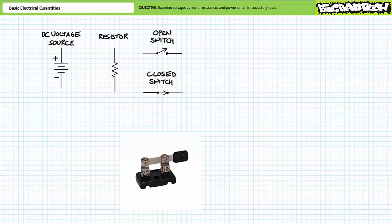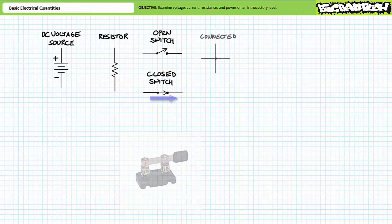Conversely, when the switch is closed, the drawbridge is down and current can pass through the switch. Wires or conductive paths are illustrated using lines.